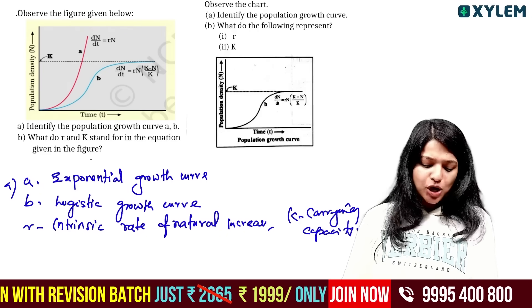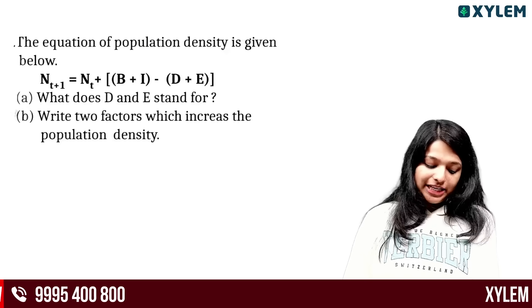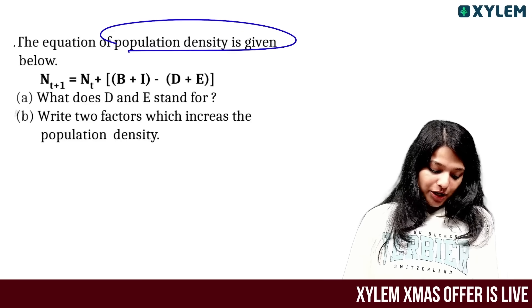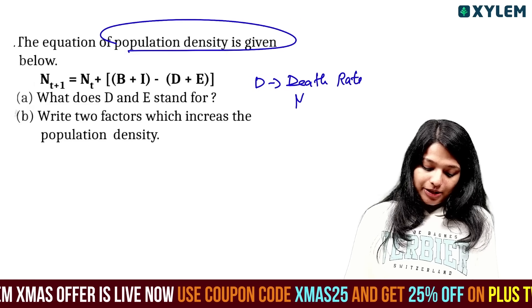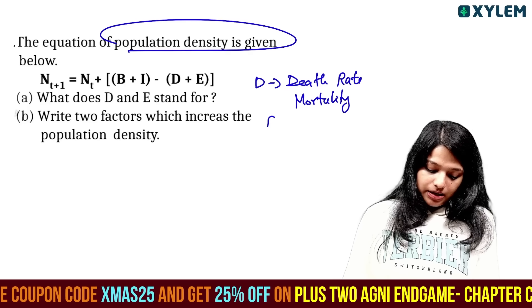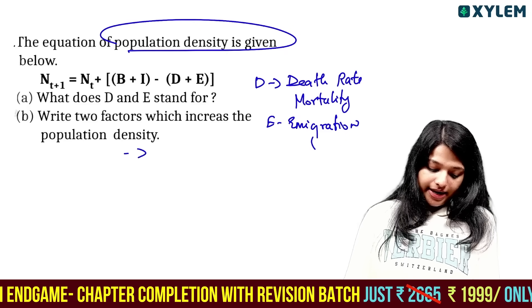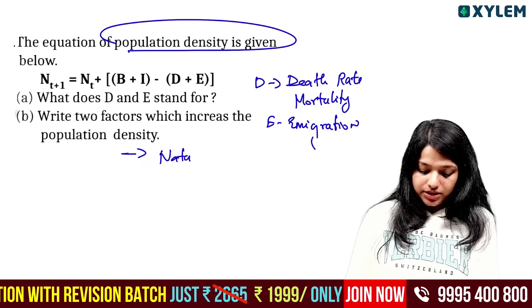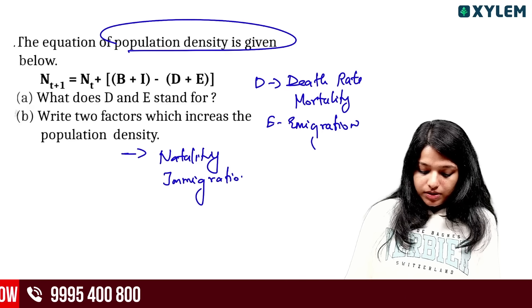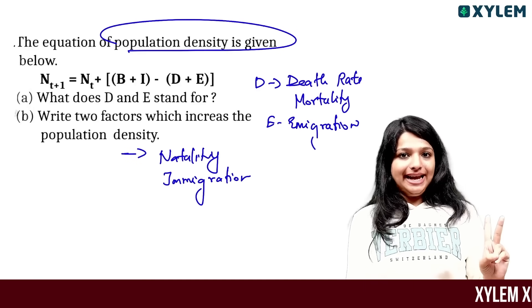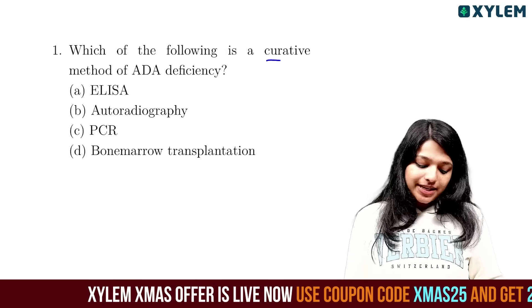In the case of population density, what does D and E stand for? D is death rate (mortality). E is immigration. The two factors that increase population density are natality and immigration. The two factors that decrease population density are mortality and emigration.